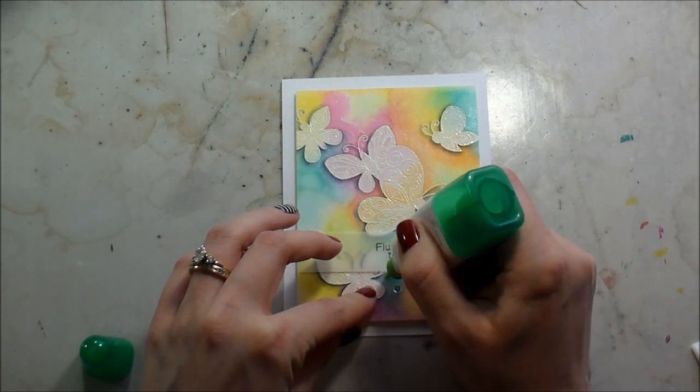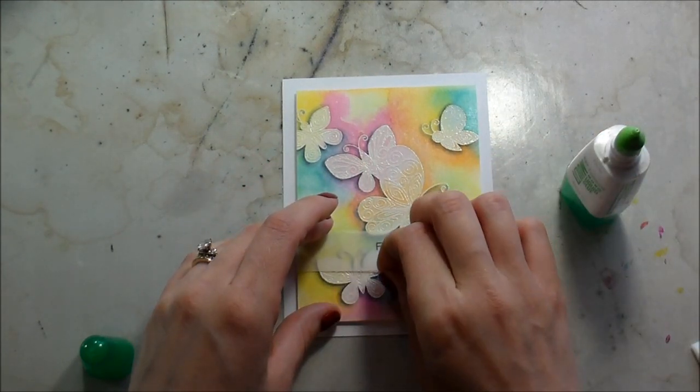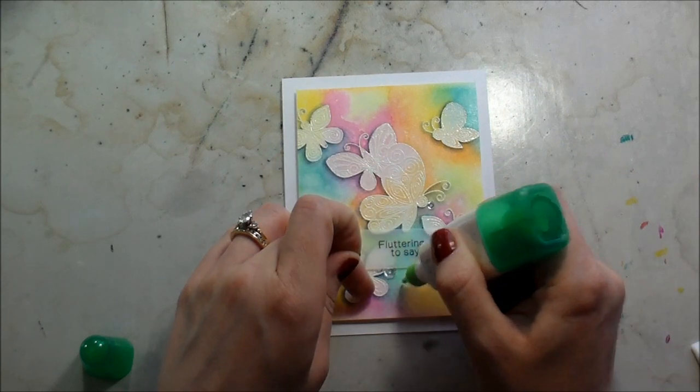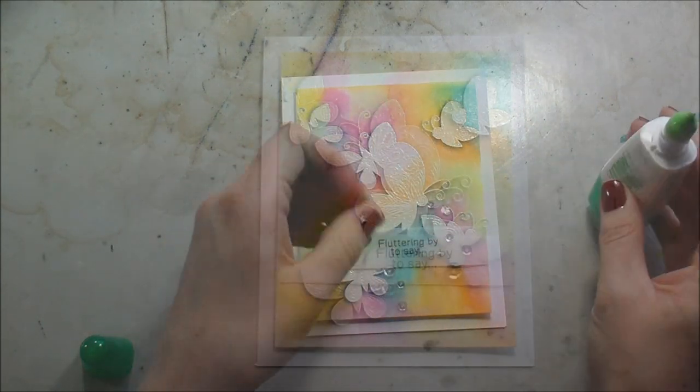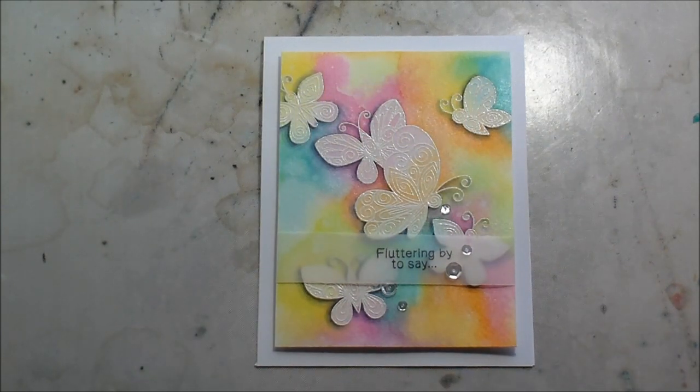So I wanted to add some sequins to the front because you have heard my professed love for everything that glitters and shimmers. These are clear sequins from Pretty Pink Posh. I thought that they would be a nice way to kind of set off that sentiment and make it look like it wasn't just floating by itself in midair. So I added those, just clear sequins. Everything was kept pretty simple. I love the way that those butterflies pop off the background. And that's the whole card.